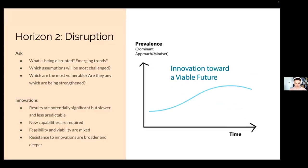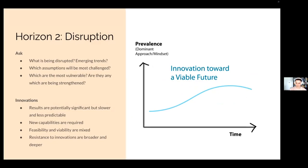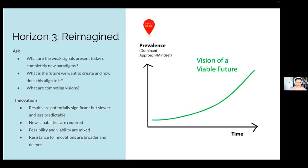For horizon two, group two, you are looking at disruption and will be exploring: what is being disrupted? What are emerging trends that we are starting to really take notice of? Which assumptions do we have that will likely be most challenged by these disruptions? What are the most vulnerable things right now? What are things that are being strengthened?